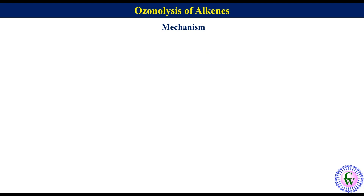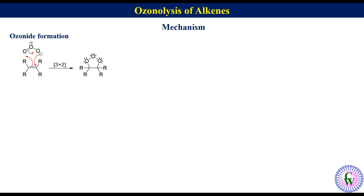In this segment we will first discuss the mechanism of ozonide formation. For better understanding we are taking a symmetrically substituted alkene. Ozone is a 1,3-dipolar compound, so alkene and ozone undergo 3+2 cycloaddition reaction to produce the primary ozonide, also called molozonide, 1,2,3-trioxolane, or Criegee intermediate.